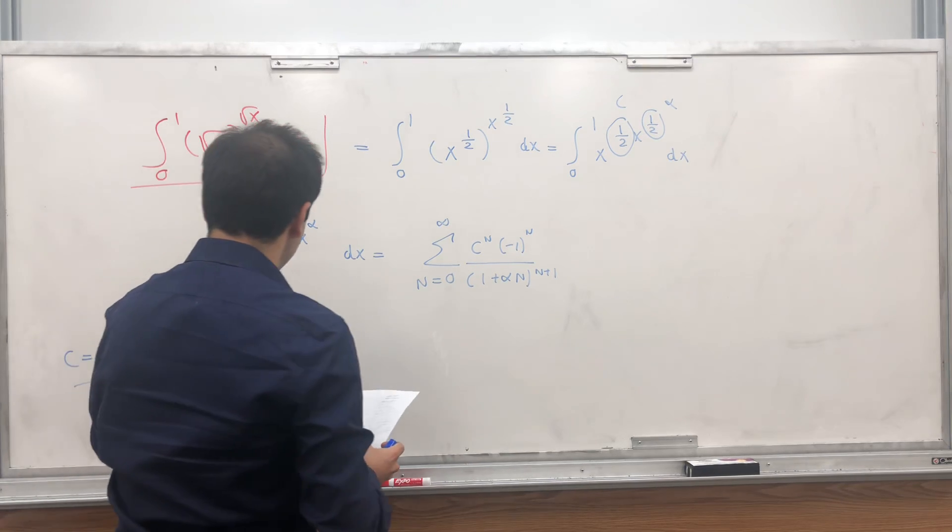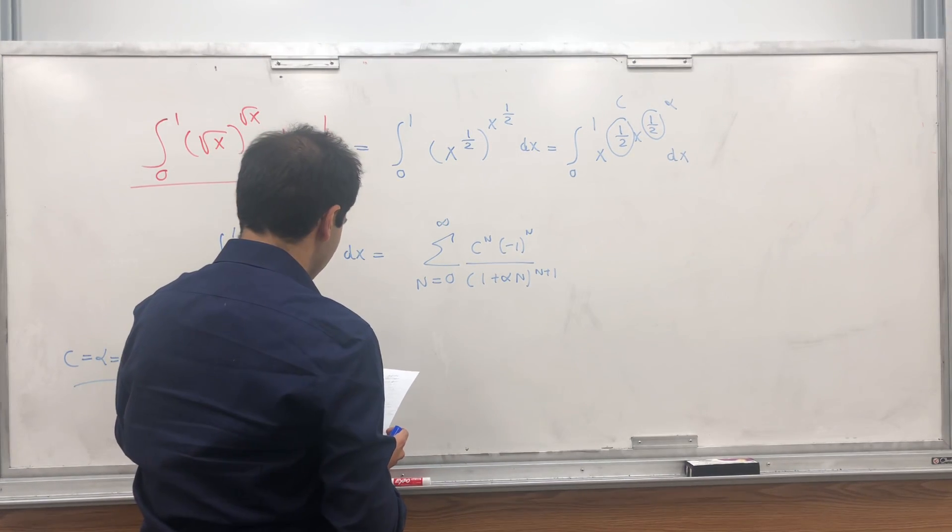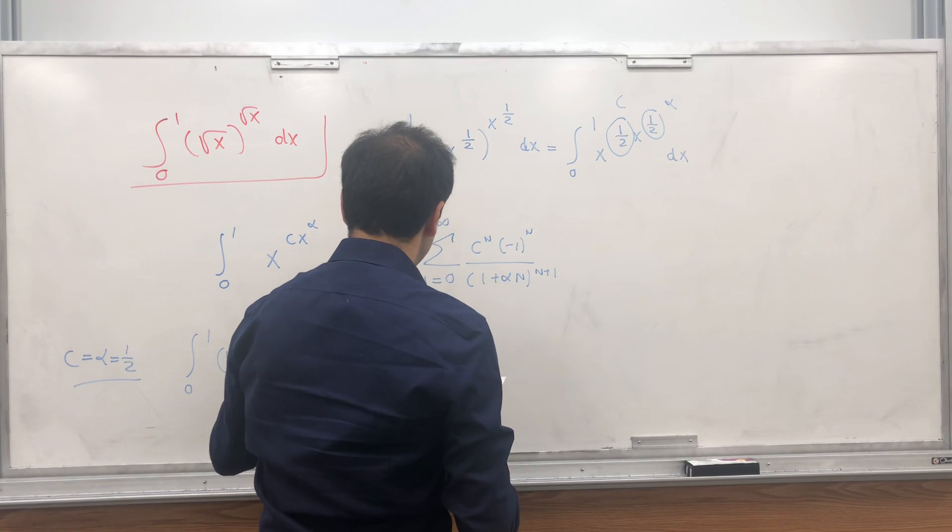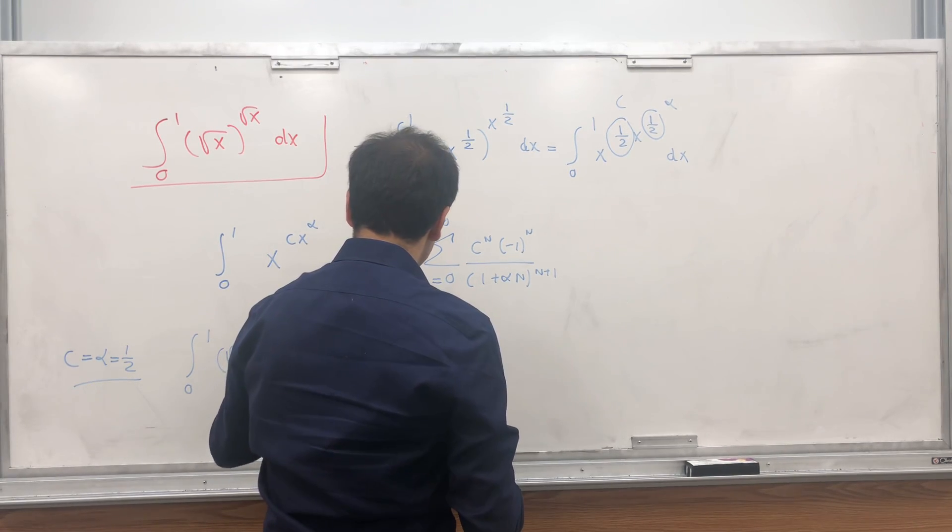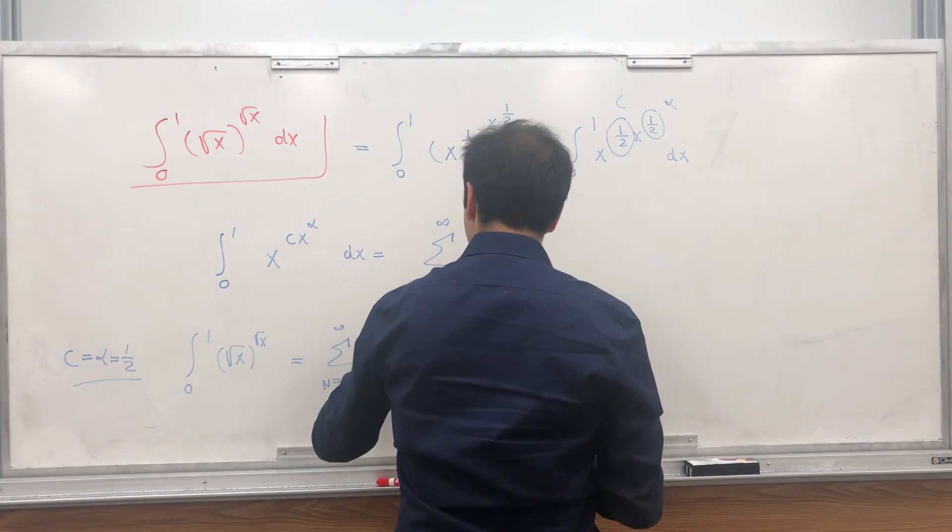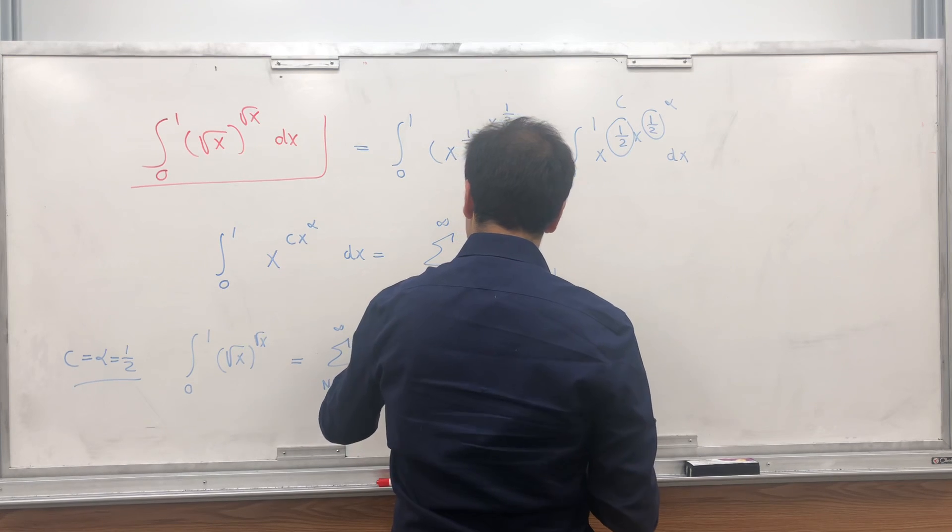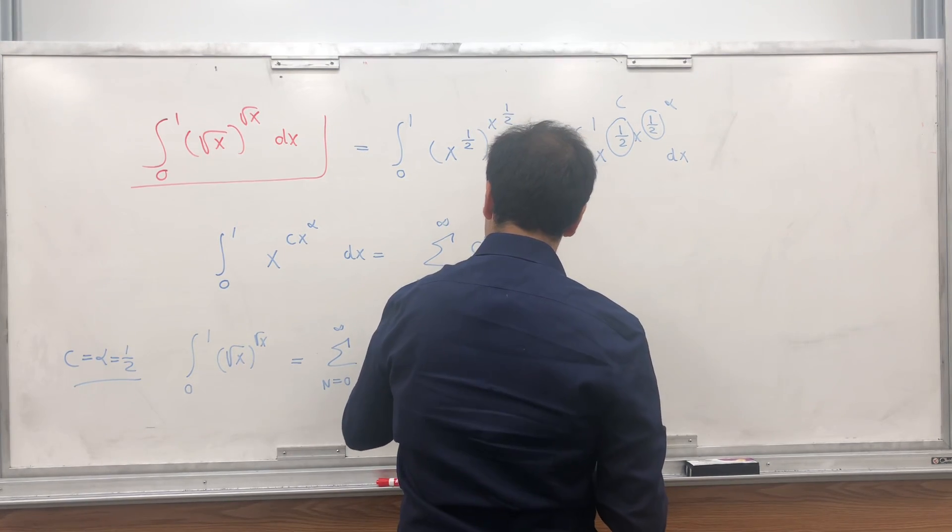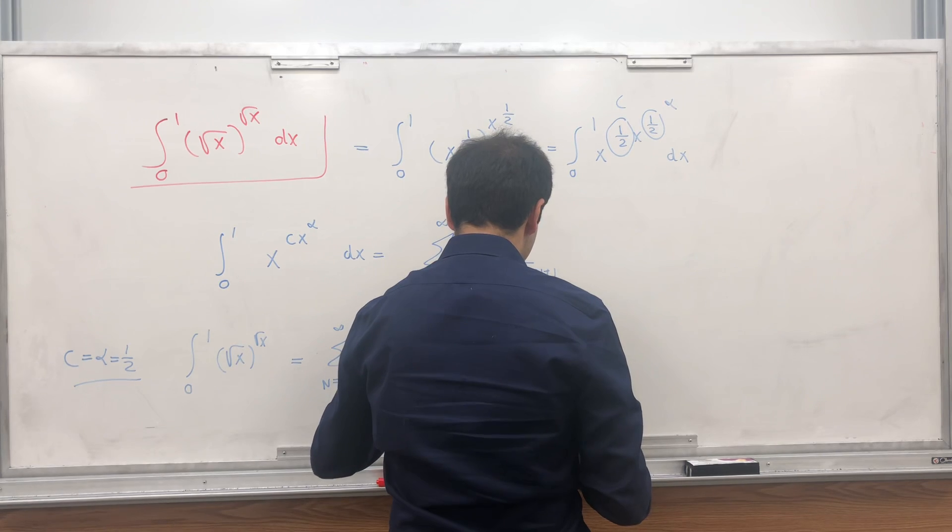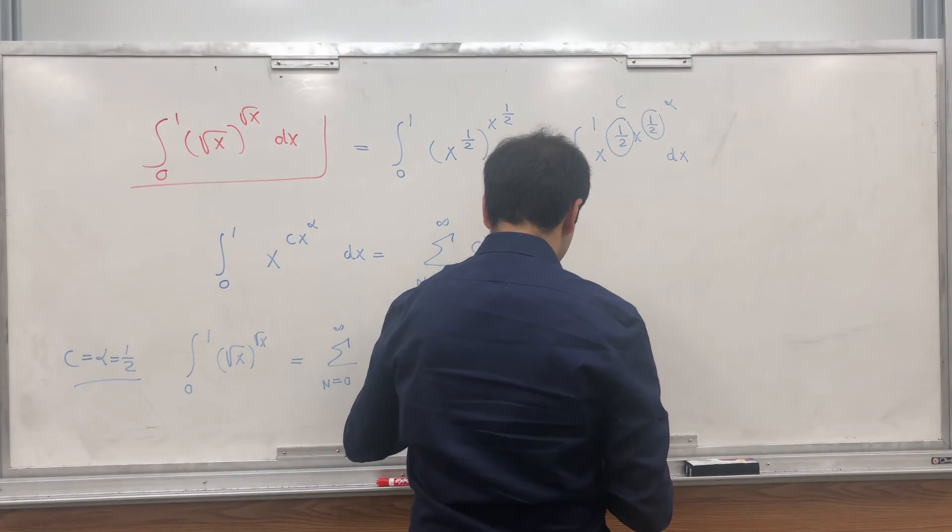The integral from 0 to 1 of square root of x to the square root of x equals the sum from n equals 0 to infinity of 1 half to the n times minus 1 to the n, over 1 plus n over 2 to the n plus 1.